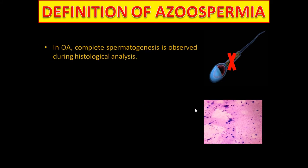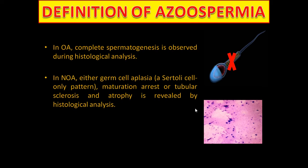In obstructive azoospermia, complete spermatogenesis is observed during histological analysis. In non-obstructive azoospermia, no sperms can be found in the histological analysis.